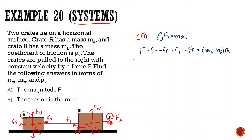The force of tension cancels out because they're the same but in different directions. The force of friction of the first block — for mB — is going to be minus mBg (the normal force) times the coefficient of friction μk.